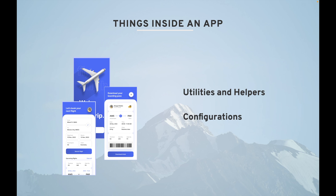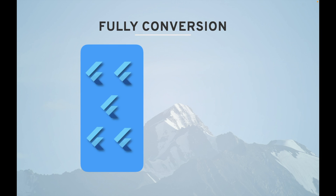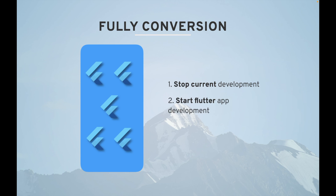Now let's see what the migration approaches are. I came up with three approaches. The first is fully conversion, where you stop your current application development — for example, if you are working on a native Android app with Kotlin, you stop that and start with Flutter right away. This is not good for everyone, but it is good for someone who has fewer than three to four features in their application.